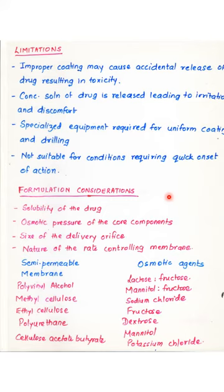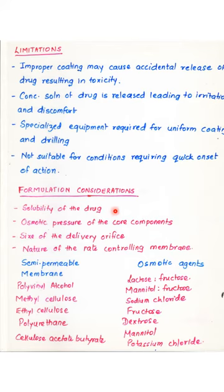Let us now look at some of the factors that should be considered while designing the formulation. The first and foremost is the solubility of the drug. Solubility is important because when the drug is soluble, it will dissolve and exert osmotic pressure. Hence osmotic systems are suitable for highly water soluble drugs. If the solubility of the drug is low, certain modifiers or osmotic agents need to be added, examples of which include polymers, certain carbohydrates, and sodium chloride.